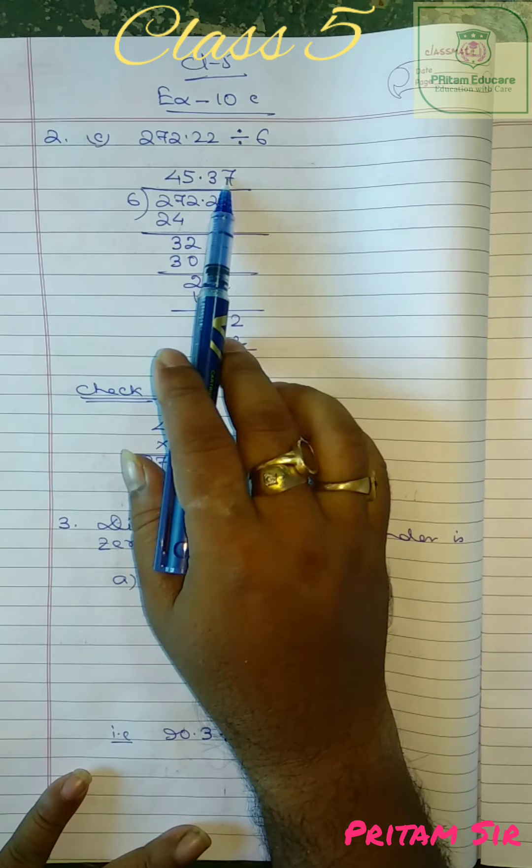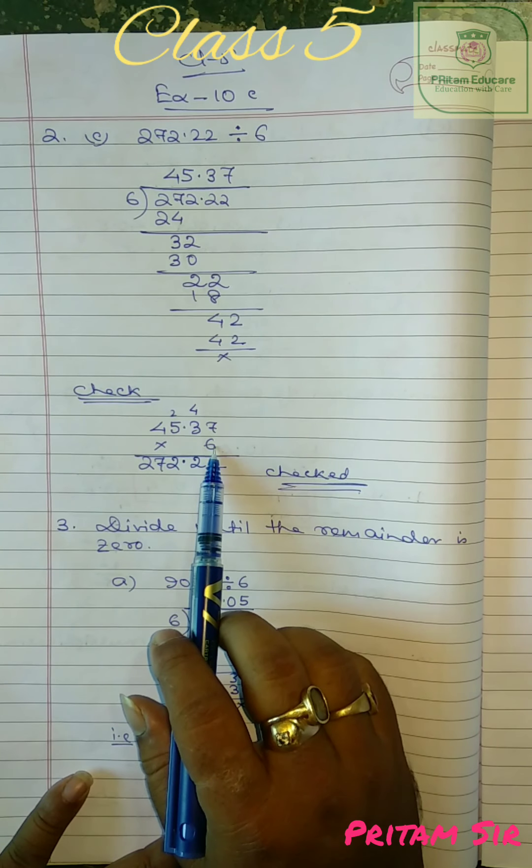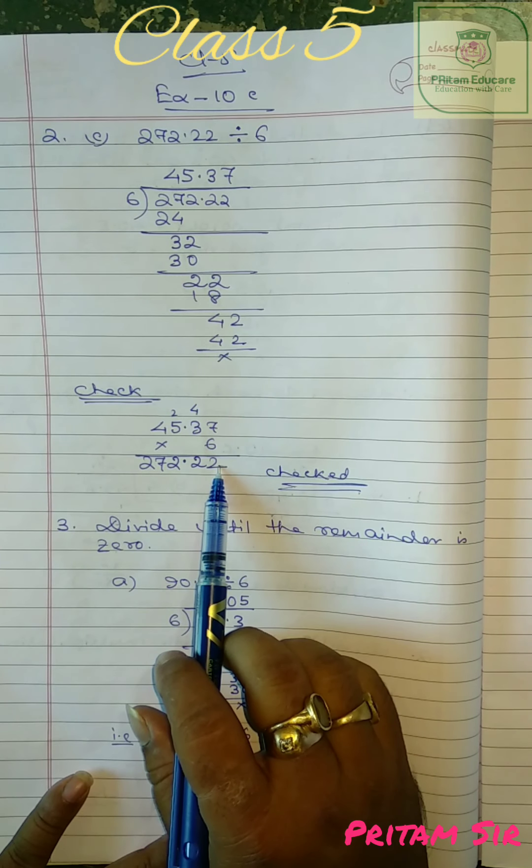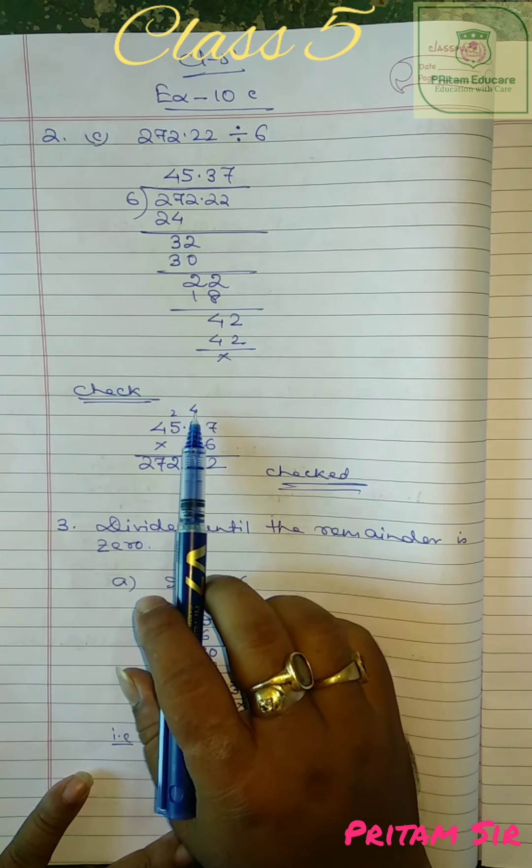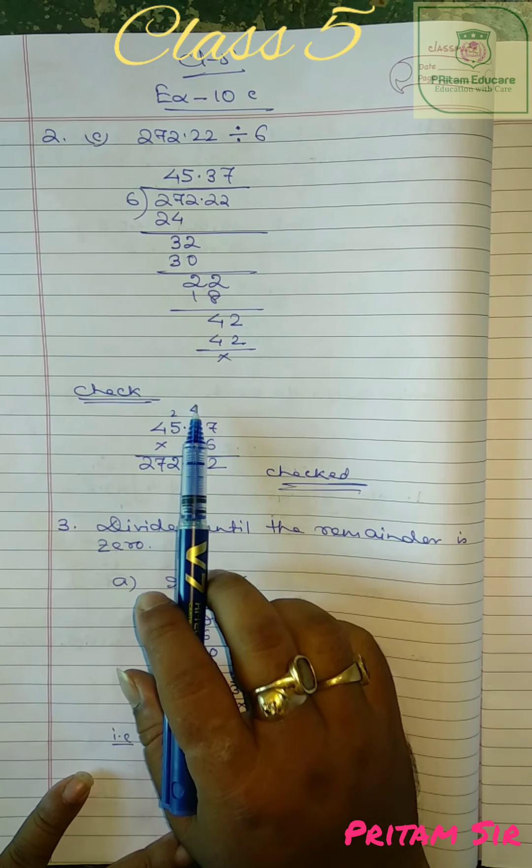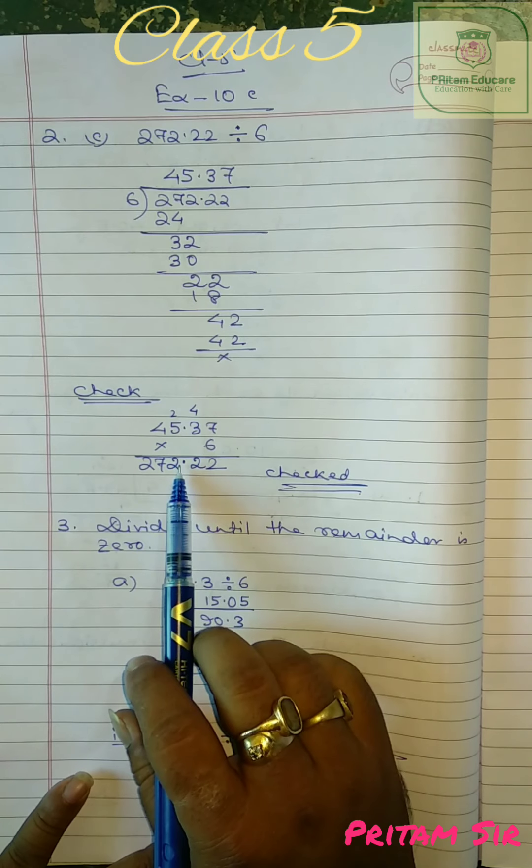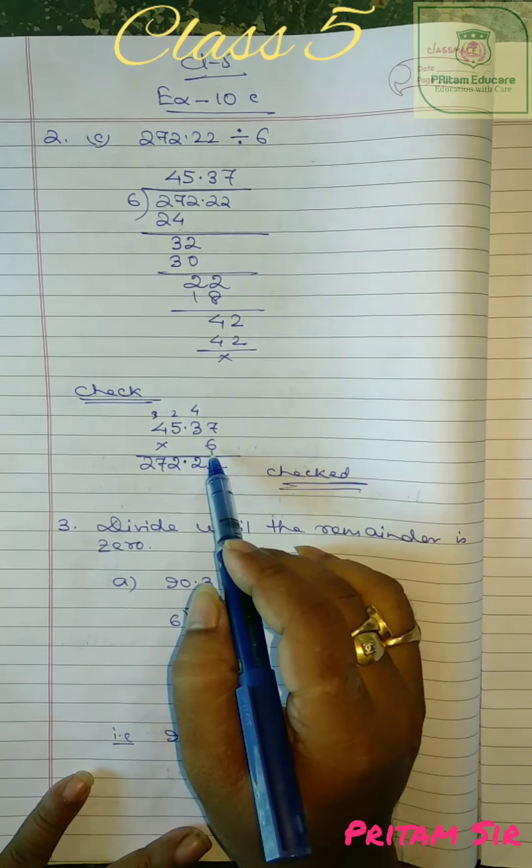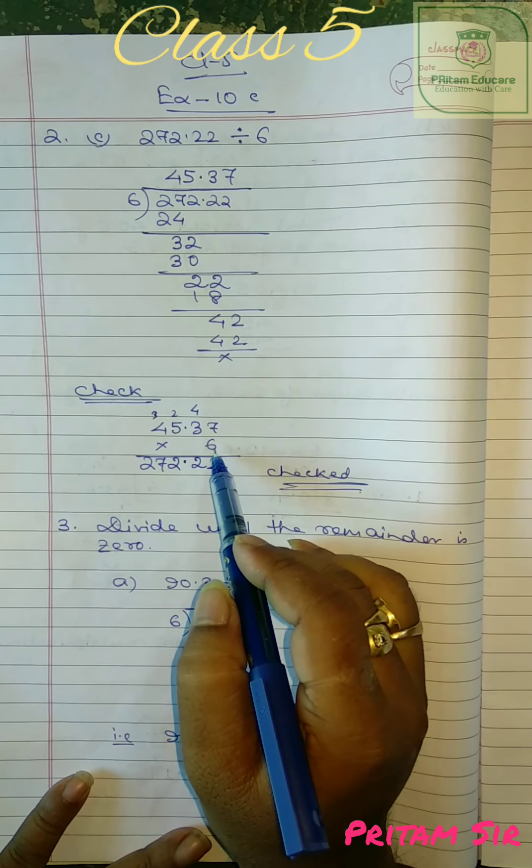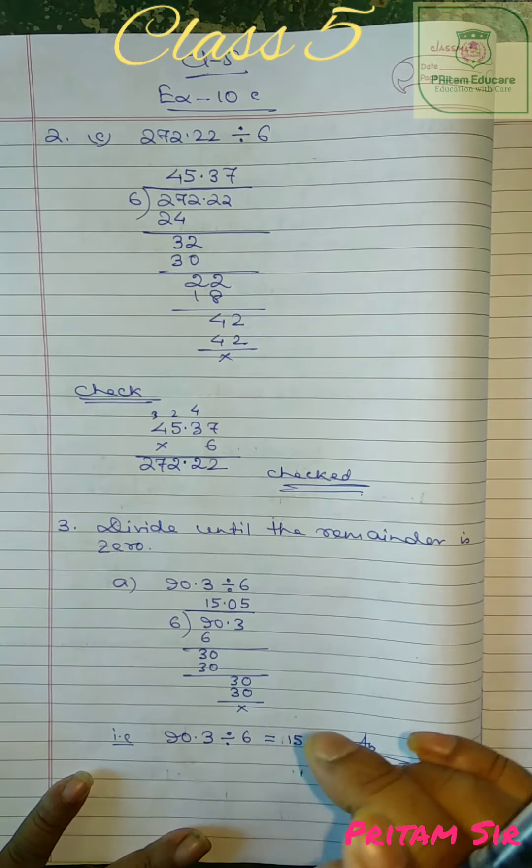Now you got 22, 3 into 6 is 18, so 4. Now this two comes, 42, 6 into 7 is 42. So our answer is 45.37. Now 45.37 into 6 we are checking. 6 into 7 is 42, 2, 4 carry, 3 into 6 is 18, 19, 20, 21, 22, 4 carry.